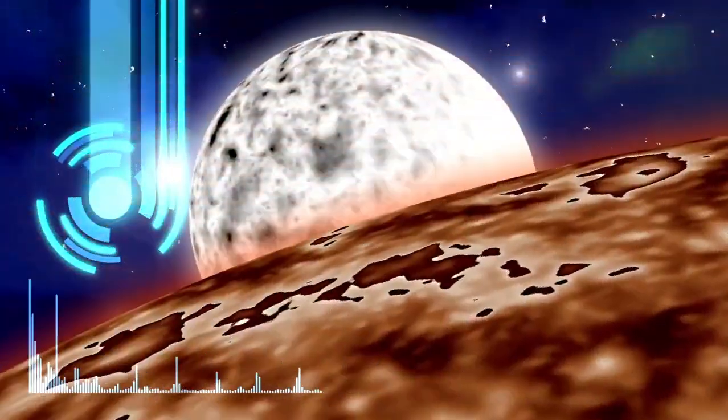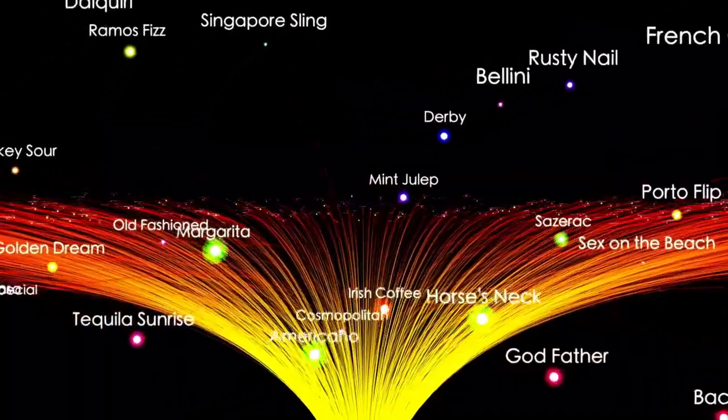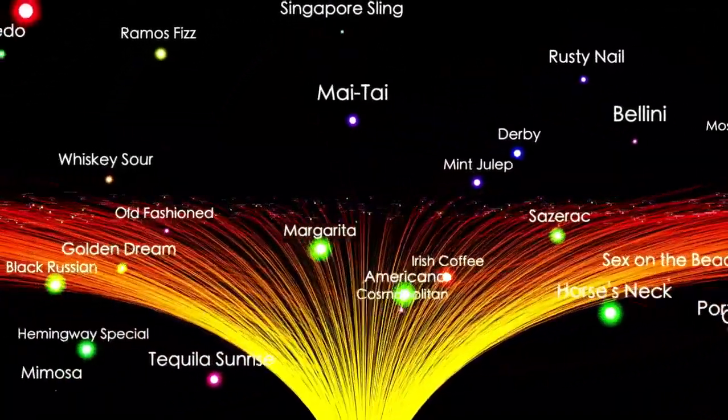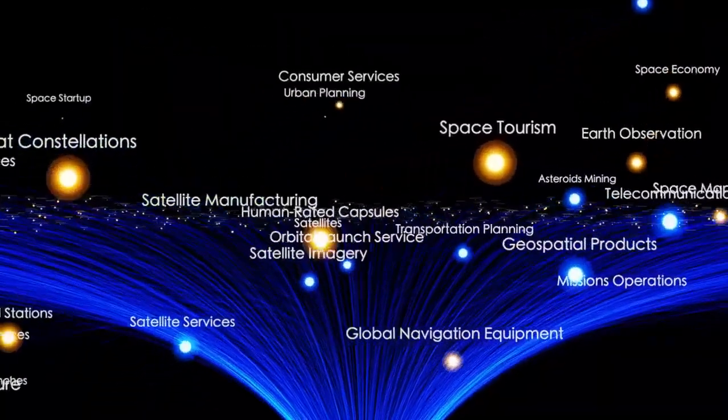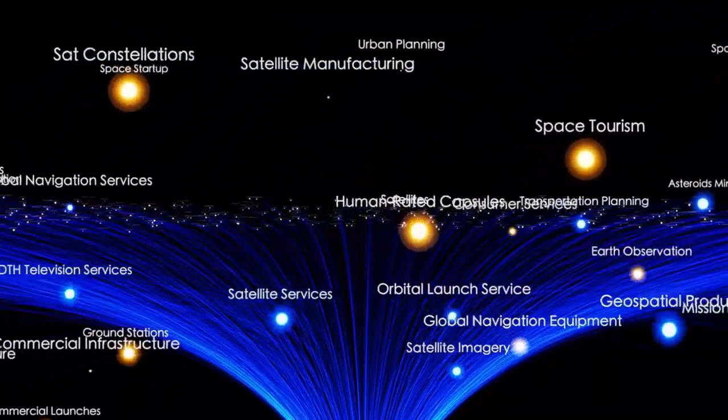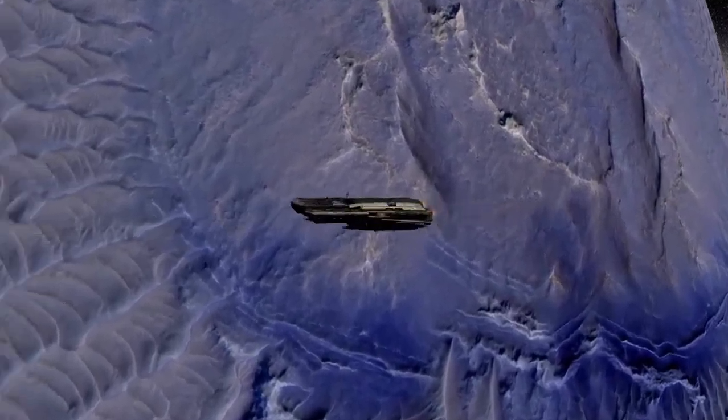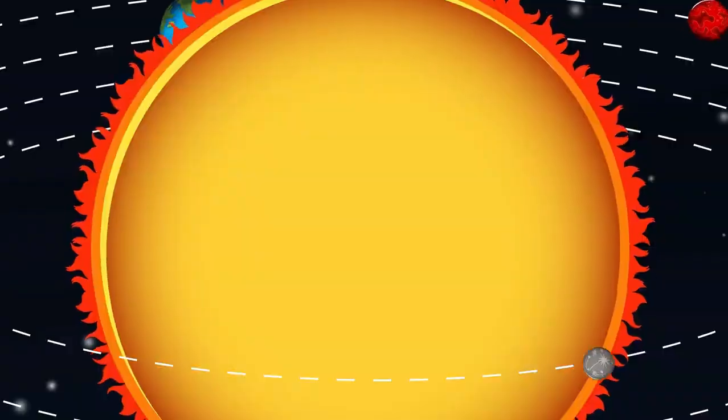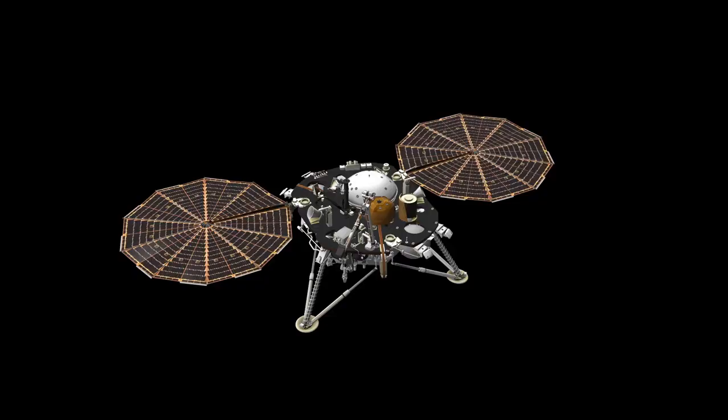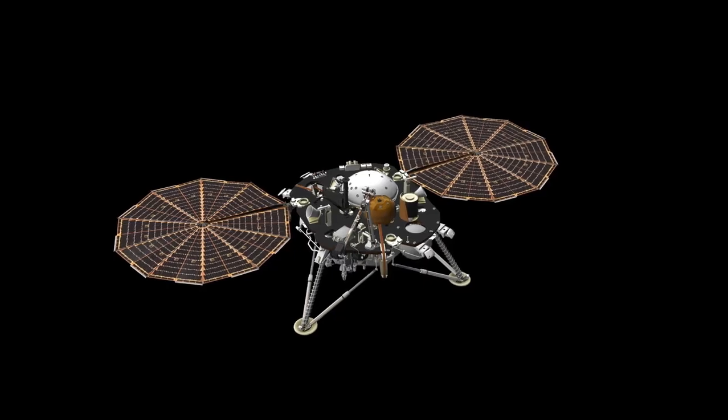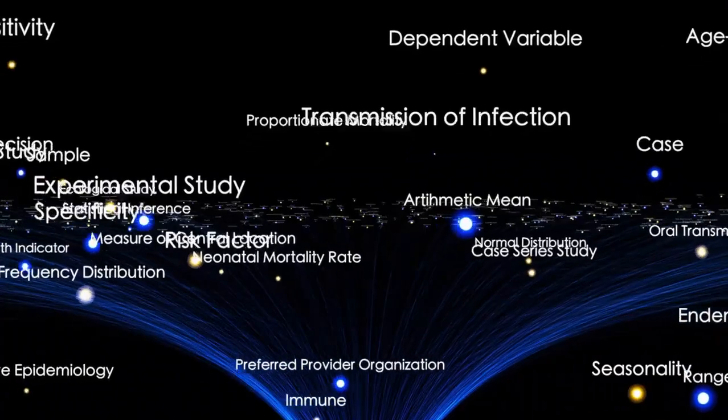While the Voyager missions have provided priceless data about the solar system and interstellar space, they also underline how much remains unexplored in the vast unknown beyond our solar system. In the past, studying interstellar plasma relied on random solar events, but Voyager 1 and 2 have changed that, giving us a treasure trove of data collected over decades. Their discoveries have illuminated the immense power of cosmic radiation and the interactions between solar and stellar particles, expanding our understanding of space.